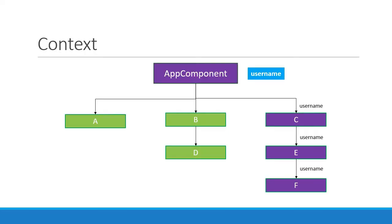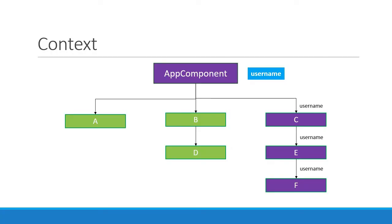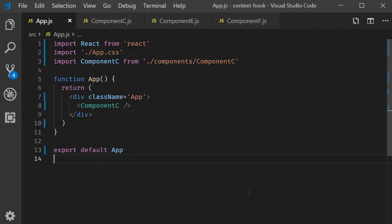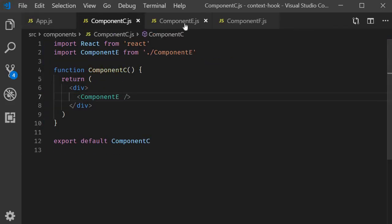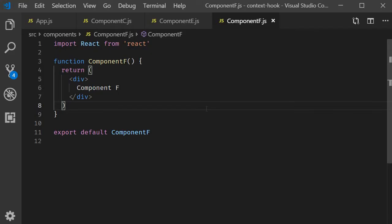Alright let's begin. For this demo I will only consider the rightmost part of the component tree, that is components C, E, and F. Our goal is to pass the username prop from the app component and read that prop in component F using context. I have already created the components and nested them at the appropriate level. In the app component we have component C, within component C we have component E, and finally within component E we have component F.